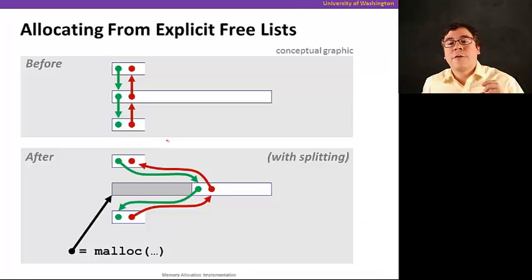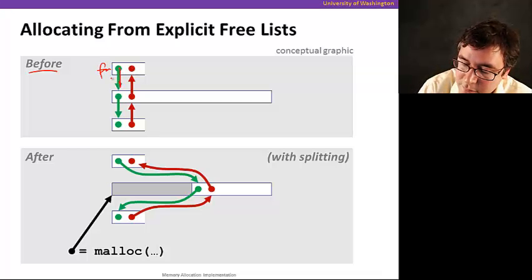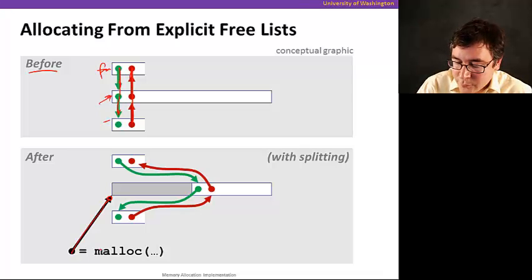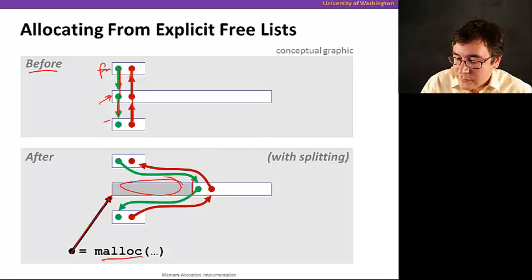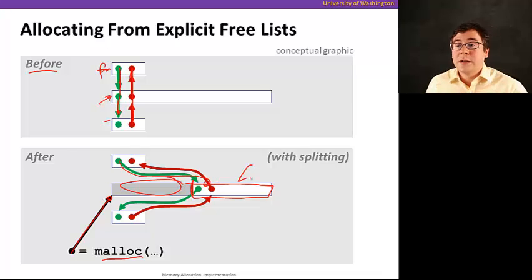Let's see how allocating from explicit lists looks. Before allocation, we have a pointer to the next block and all blocks are free. When we allocate, we choose one block to return to malloc. The allocated portion is used and whatever remains free is split. We then insert that remainder back and update the pointers so it's included in the explicit free list.